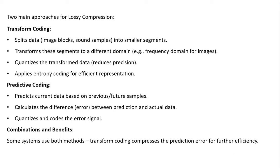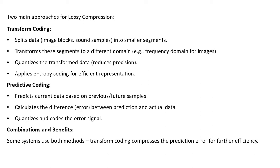There are two main approaches for lossy compression. The first is transform coding. In transform coding, we split the data — that is the image — into small blocks, then transform each segment to a different domain, generally from the spatial domain to the frequency domain. We then quantize the transform data — this is the actual lossy step where data is permanently lost, reducing precision — and after that apply entropy coding for efficient representation, using arithmetic encoding or Huffman encoding.